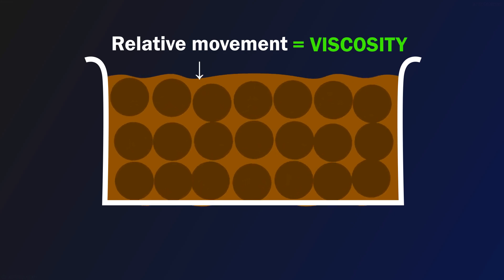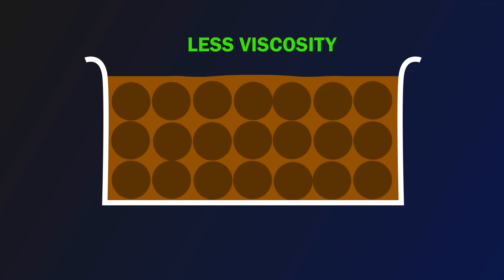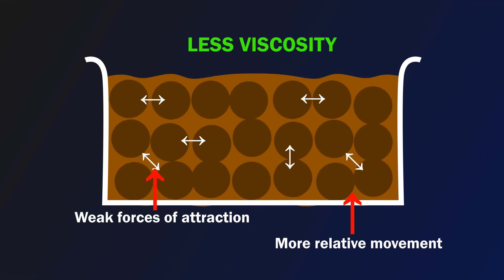A liquid is more viscous when there is strong attraction force and relative movement of particles is less. And a liquid is less viscous when there is less attraction force between molecules and there is easy movement of particles relative to each other.